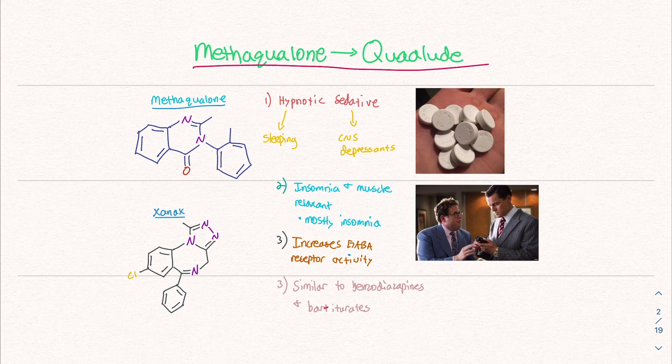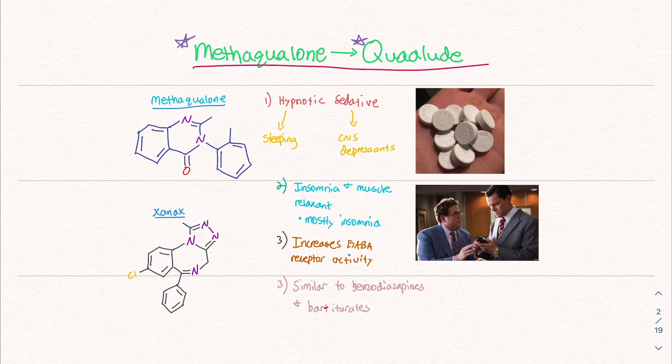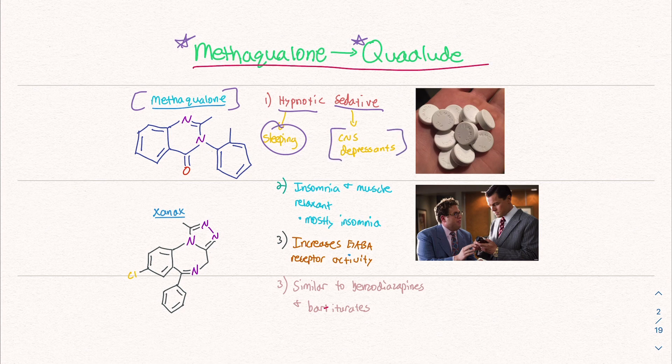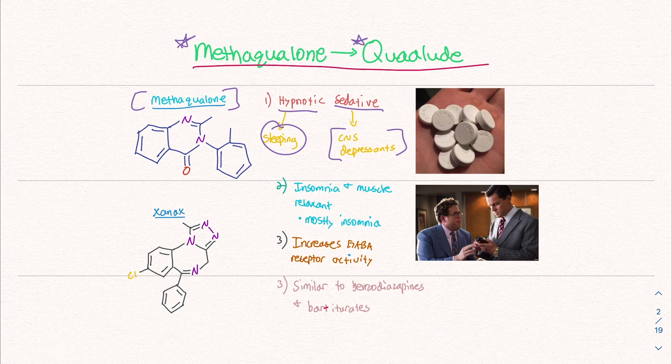Let's start by defining some terms. Quaalude is the everyday name for the drug methoqualone. Methoqualone is a hypnotic sedative, part of this class of substances. Hypnotic meaning it causes sleep, sedative meaning it depresses the central nervous system. This is where you get the intense relaxation, which we'll talk about in a second.